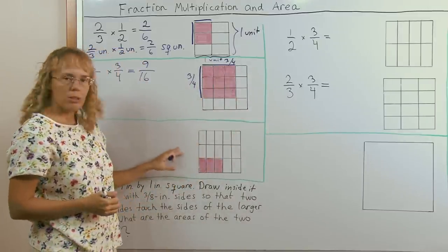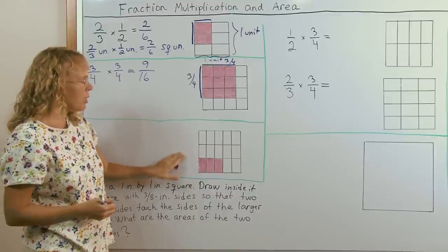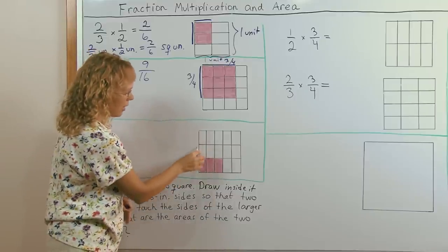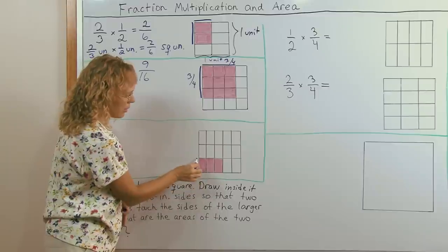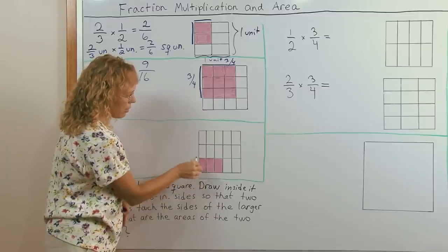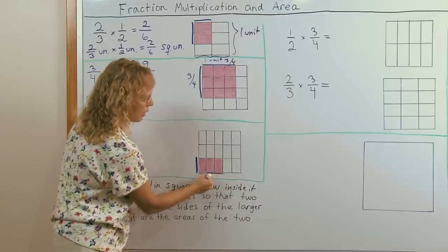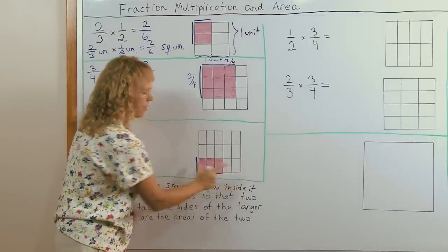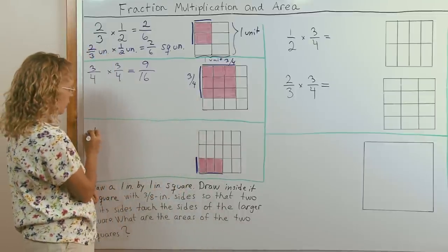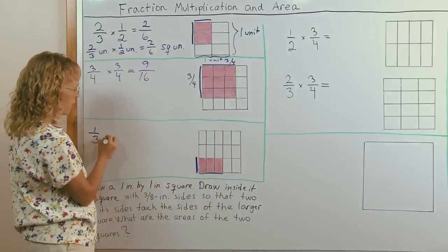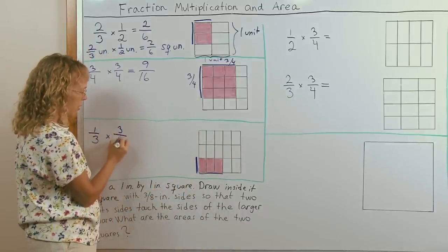Here, the task is to write the multiplication to match this picture. On this side, it's divided into three parts. So this is one third of a unit. And then this side here would be one, two, three out of five, three fifths of a unit. So my multiplication is one third of a unit times three fifths of a unit.